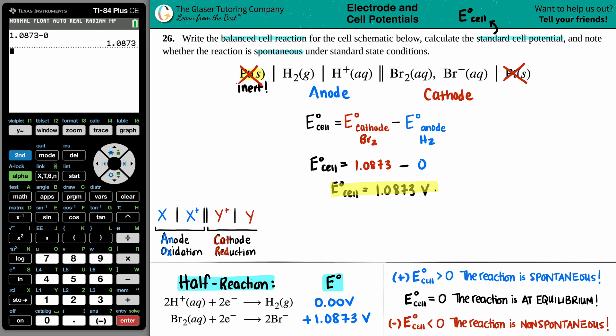Now we can just jump down to finding out is this spontaneous or not? Well, that just comes from the sign. If you have a positive E-cell value, the reaction is spontaneous. If you have a negative E-cell value, it's non-spontaneous. So here, this is clearly a positive value. So I know that this is a spontaneous reaction.